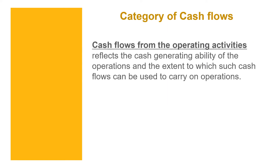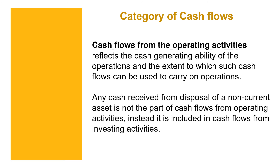Cash flows from operating activities reflects the cash-generating ability of the operations and the extent to which such cash flows can be used to carry on operations. Examples of operating activities include the manufacturing of products, the acquisition of raw materials, and the buying and selling of goods or inventory. Any cash received from the disposal of a non-current asset is not part of cash flow from operating activities — instead, it is included in cash flow from investing activities.